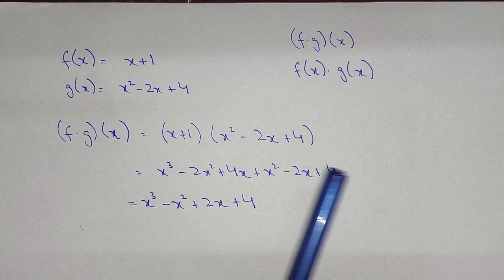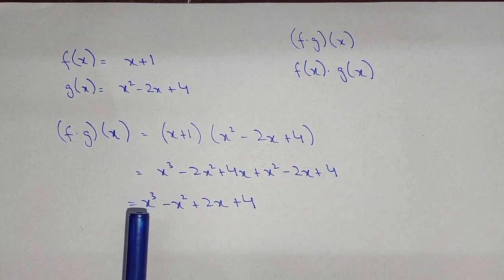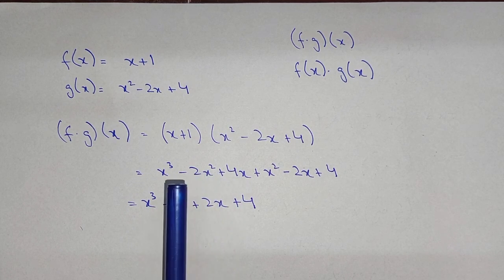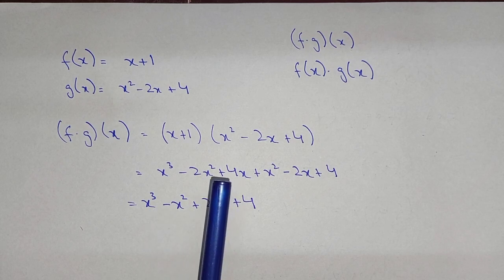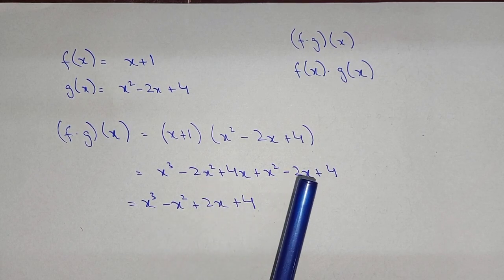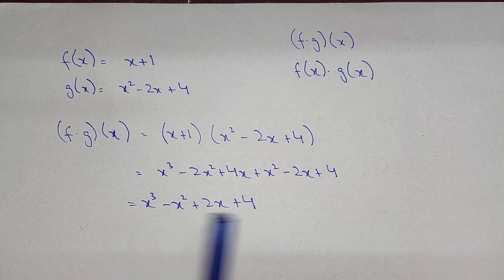So you can further simplify it in the descending order. So that will be x cube minus 2x square plus x square, that will be minus x square. So plus 4x minus 2x, that will be plus 2x, and plus 4. So this is the final answer.